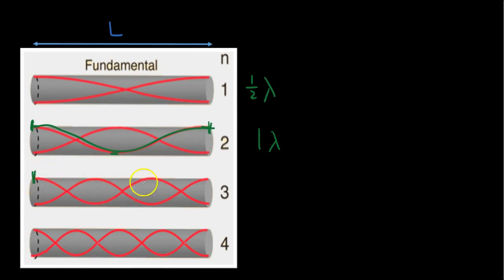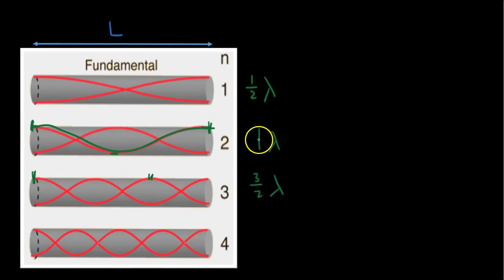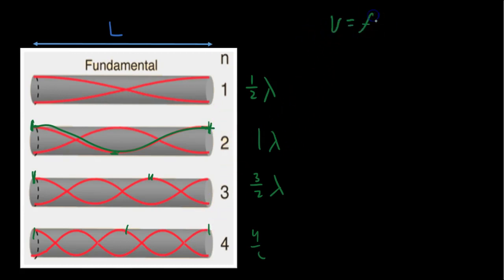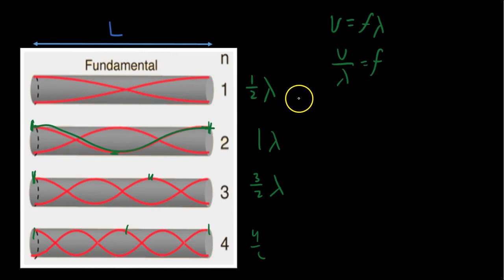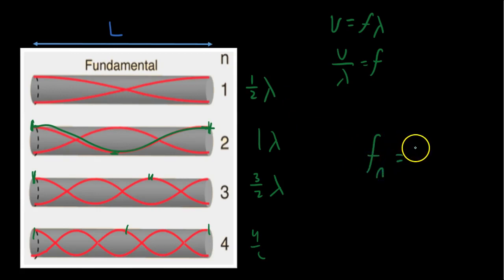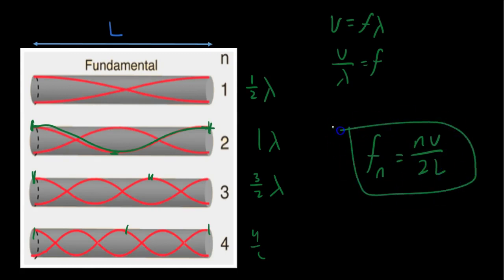I'm doubling the frequency and halving the wavelength — fitting in twice as many. I have one wavelength here to here and a half — that's three halves. I have multiples: one half, two halves, three halves, four halves, because I have two full wavelengths right here. If I was to write out those equations — V equals F lambda, therefore frequency equals V over lambda — and write it in terms of L, you get the exact same expression as before.